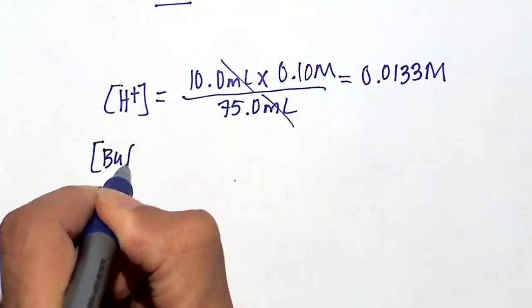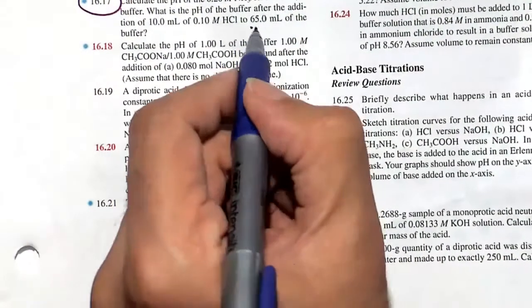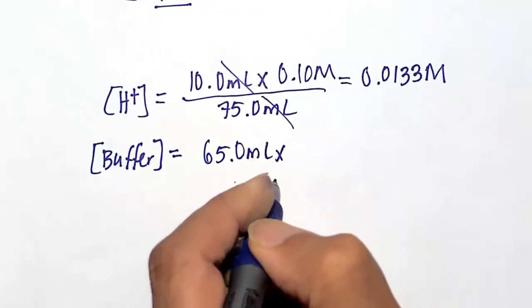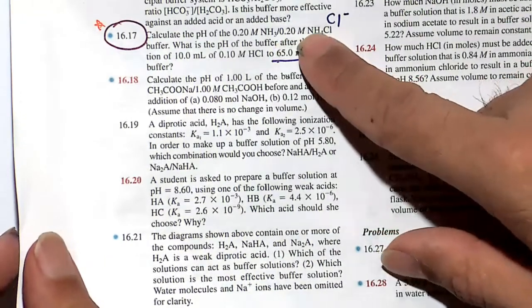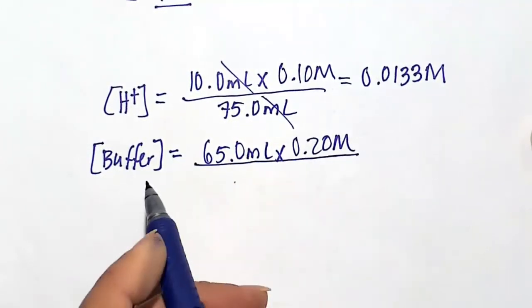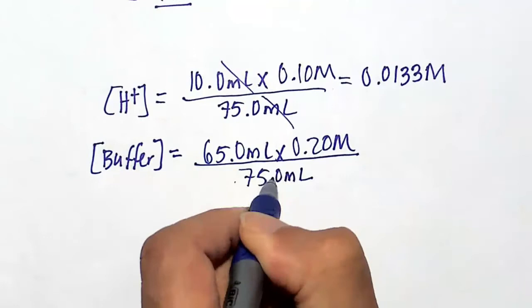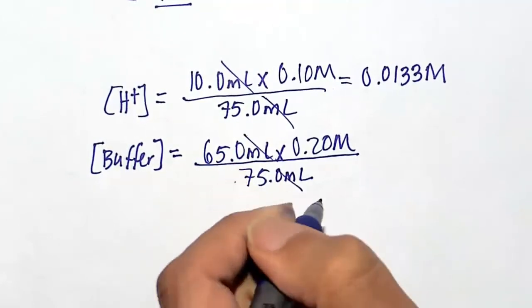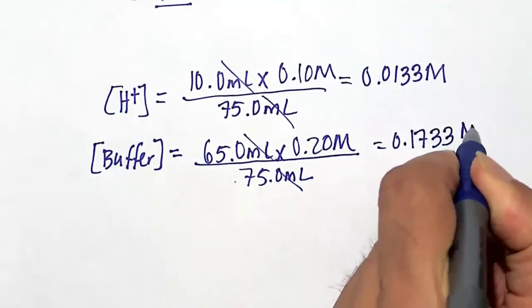Now we'll figure out the final concentration of the buffer. Fortunately in this problem, the concentration of both species is 0.20 molar. We have 65 milliliters of the buffer, and the concentration is 0.20 molar for both the conjugate base and the conjugate acid. It would be a little more complicated if the acid and base of the buffer were at different concentrations, but they're at the same concentration. Total volume 75 milliliters, mills cancel. The final concentration of our NH3 and NH4+ buffers would be 0.1733 molar.